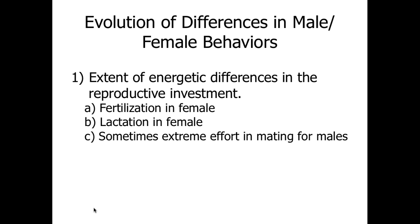There are evolutionary differences in the behaviors of males and females, and this largely falls back to the extent of energy that each one is going to need to invest, both in terms of the sexual component of reproduction as well as the behavioral component after reproduction has taken place. Fertilization tends to be a more energy-involved process for females. In mammals, they have lactation after birth and take part in most of the child rearing, although in some cases there is extreme effort during the mating process prior to fertilization for males.